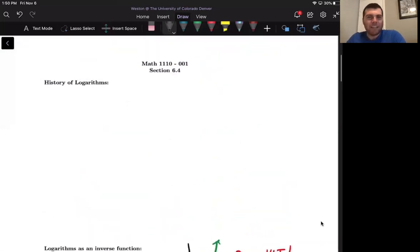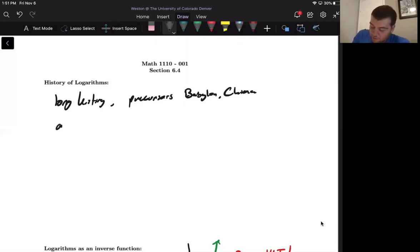We're going to scroll up. I did my notes in an order I ended up not really liking. And just talk a little bit about the history. So the weird thing to me is that logs were actually used well before exponential expressions. They actually have a really long history. There's precursors out of Babylon and China.